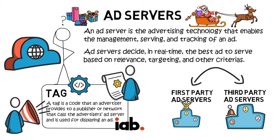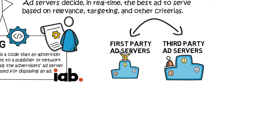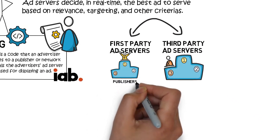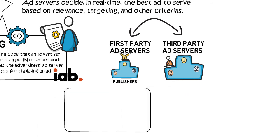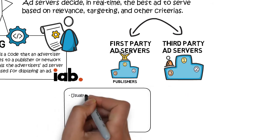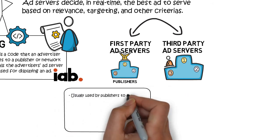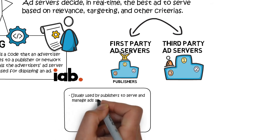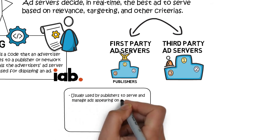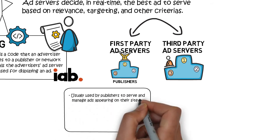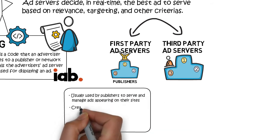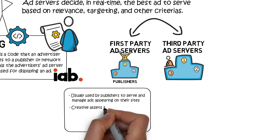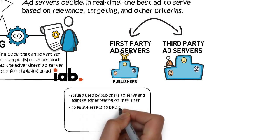There are two types of ad servers: first-party and third-party. First-party ad servers are usually used by publishers to serve and manage ads appearing on their site for both direct and programmatic campaigns. They decide which creative assets should be displayed in an ad slot based on audience targeting data.